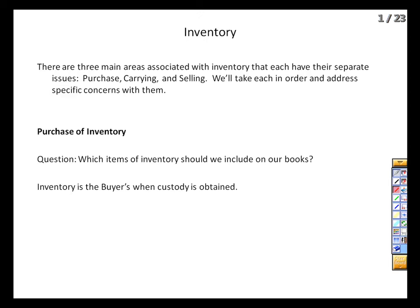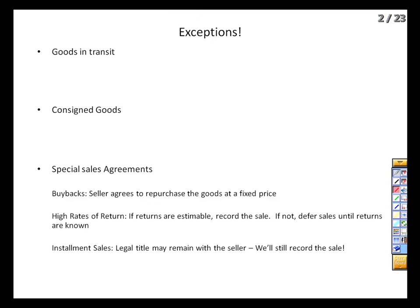However, we live in a globalized economy, and often inventory will travel halfway around the world to us. While it's in transit, it's not in our warehouse or in their warehouse, so whose inventory is it? This brings us to our first exception, related to goods in transit. Here we are on December 31st — our reporting date — and someone just shipped us a volleyball and some ice skates. The FedEx plane goes down. It depends on the shipping terms, and so we introduce the term free on board, or FOB.